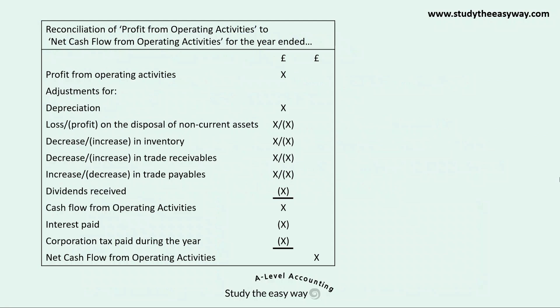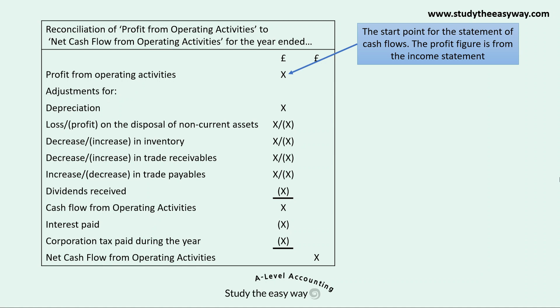On the left-hand side of the screen you can see the format for Section 1 of the Statement of Cash Flows. On the right-hand side are two columns for the figures, represented with the letter X. The letter X represents an amount that will be added, and where the X is shown in brackets, that indicates the amount will be deducted when the subtotal and total are calculated. We start the Statement of Cash Flows with a figure for profit from operating activities, which comes directly from the income statement.